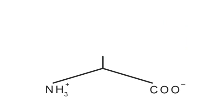Next up is cysteine, and its single-letter abbreviation is C. That's just another one you'll have to memorize. Cysteine just has a sulfhydryl group attached directly to the beta carbon. You can think of it as serine, just with a thiol group instead of a hydroxy group.